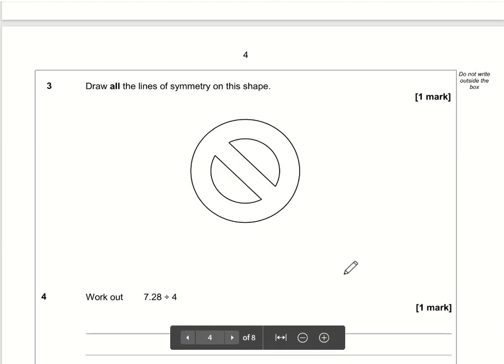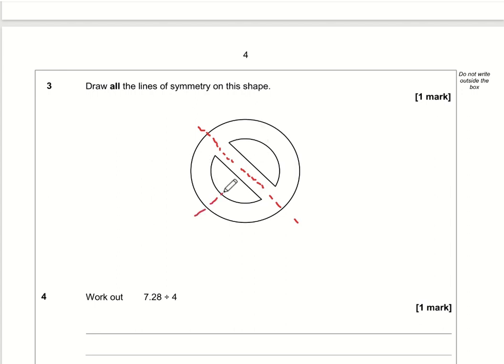Question number 3: draw all the lines of symmetry on this shape. At first glance it looks like it's not symmetrical at all, but when you think about it, if you fold it down this line here, the left hand side is the same as the right hand side. Similarly, there's another line of symmetry through there, so in total there are two lines of symmetry.